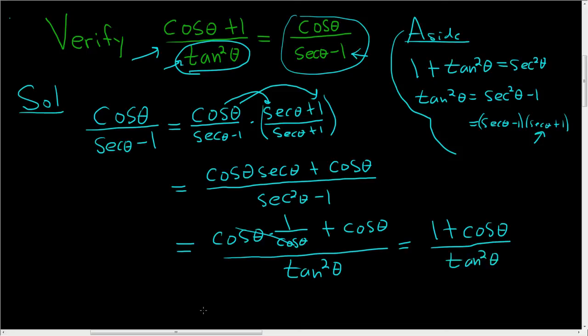Are we done? I think we should, for good measure, write exactly what we have here. So 1 plus cosine is really just cosine plus 1, all being divided by tangent squared of theta.